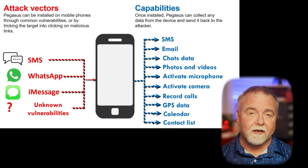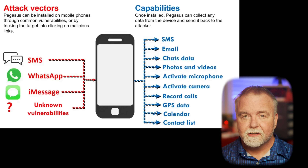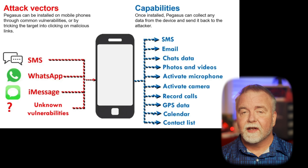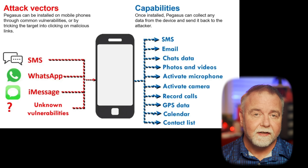Pegasus was used to target journalists, activists, politicians, and even heads of state, raising significant concerns about surveillance and privacy. The implications of Pegasus were global, triggering debates on the ethics of surveillance, the protection of privacy, and the role of governments in regulating such powerful cyber weapons. The fact that it could bypass even the most careful behavior and security awareness highlighted the severe impact that zero-click vulnerabilities can have on both personal privacy and national security.